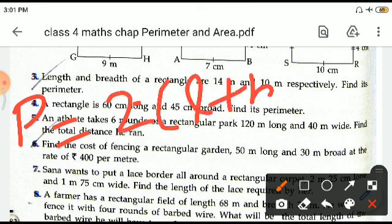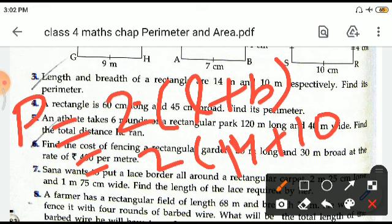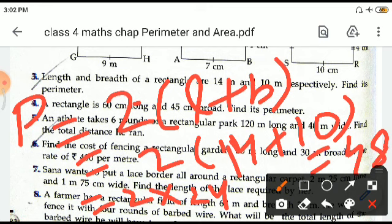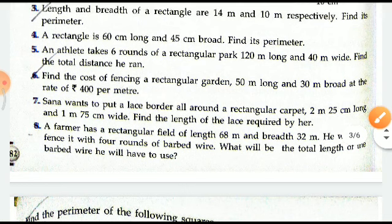L plus B, so it is 2 into bracket 14 plus 10, which will be 2 into 24. So this will be 48 centimeters. This is how the perimeter is calculated. Cost of fencing a rectangular garden.